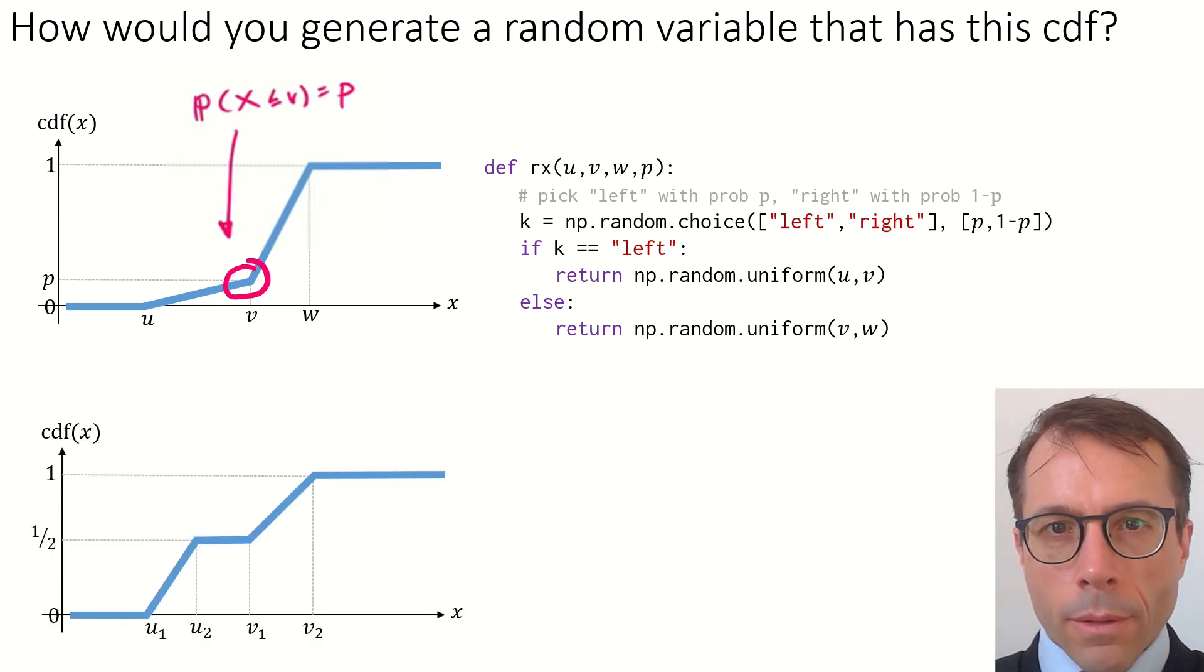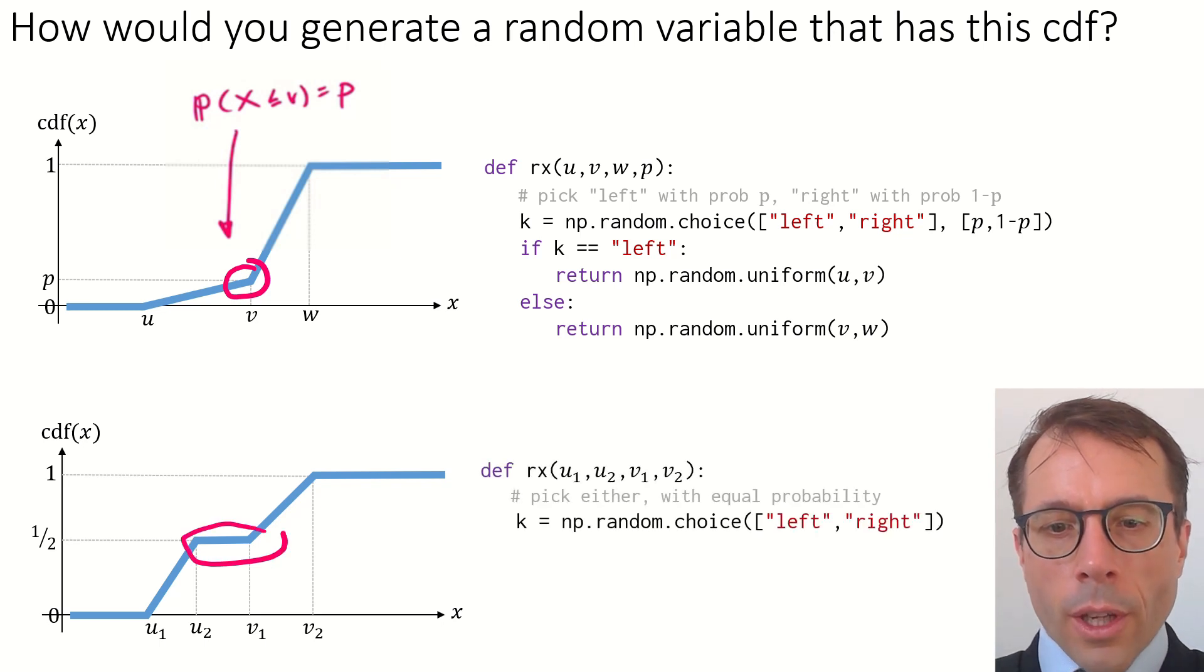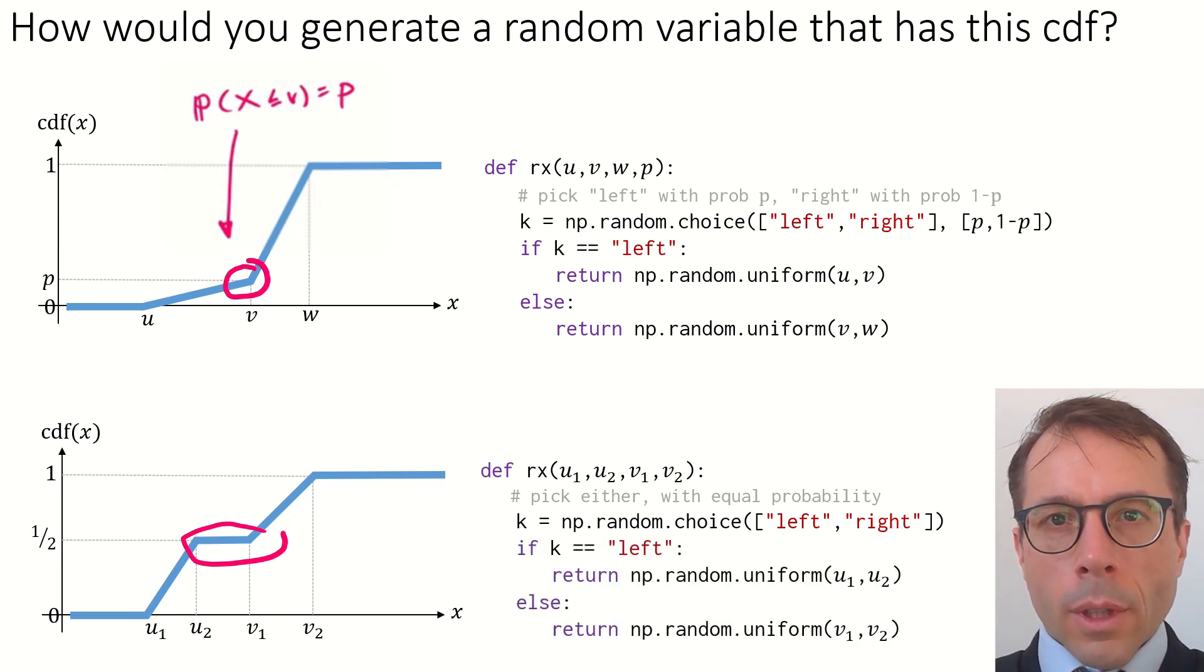Here is another CDF. Let's break it down in just the same way. First, decide if we want to be on the left part or the right part. The CDF tells me the probability of each is a half, so it's just a simple call to np.random.choice. I don't even need to specify the probabilities. Then, just as before, I'll choose a uniform random variable to generate, with parameters based on which side I'm on. The flat bit between u2 and v1 doesn't matter.